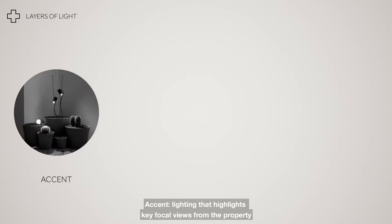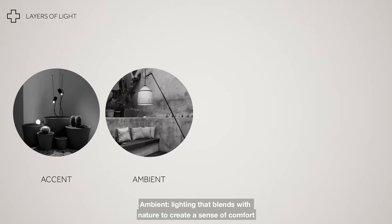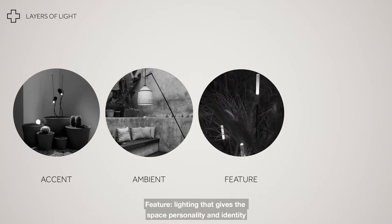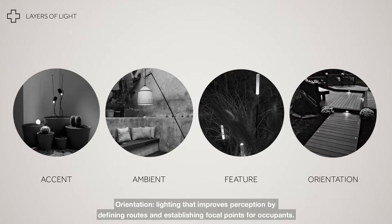Accent: lighting that highlights key focal views from the property. Ambient: lighting that blends with nature to create a sense of comfort. Feature: lighting that gives the space personality and identity — this may be lighting to a sculpture, a water feature, or a particular plant that you like. Orientation: lighting that improves perception and attention by defining routes and establishing focal points for occupants.